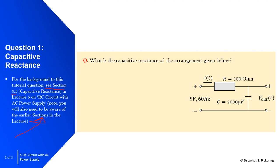What is the capacitive reactance of the arrangement given below? Here we've got a resistor, a capacitor in series, 9 volts, and the alternating current is at 60 hertz. And then V_out here if we want to measure the voltage out.